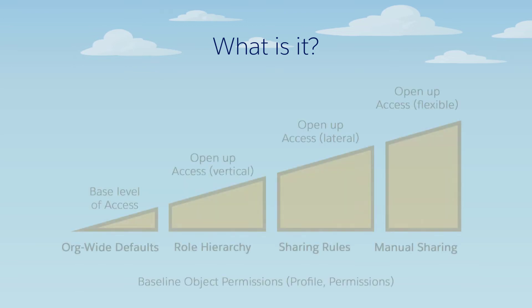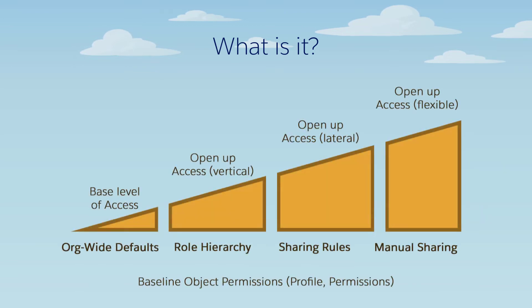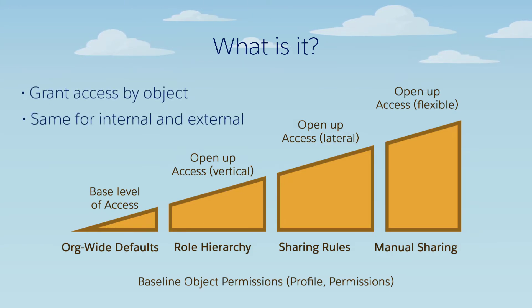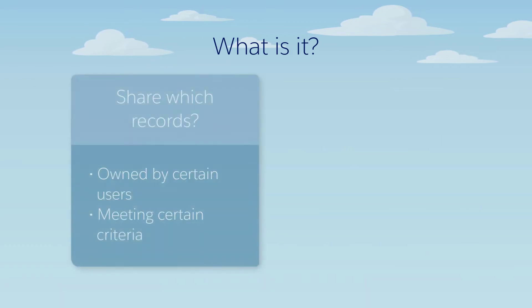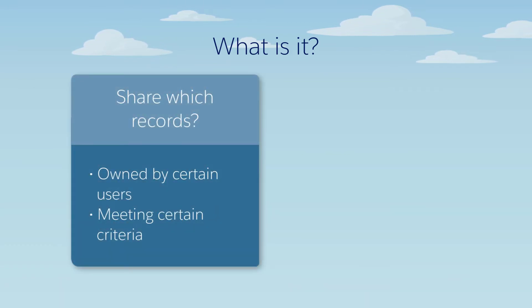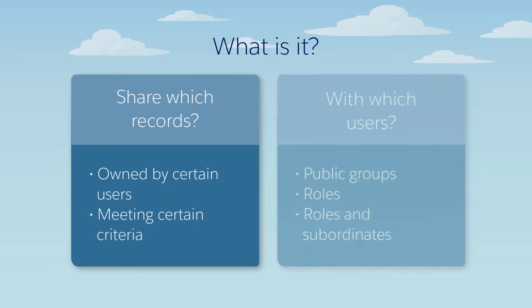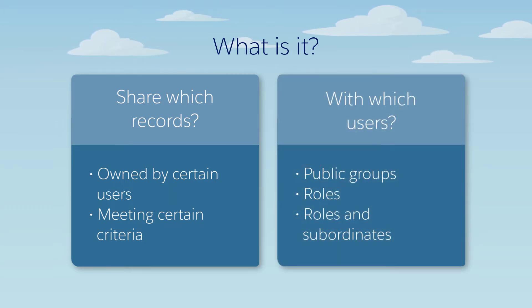Let's do a quick recap of sharing rules and what they do. Sharing rules grant additional access to records on an object-by-object basis, and work the same way for external users as they do for internal users. You can create sharing rules based on owner or meeting certain criteria, and share records between groups of users.